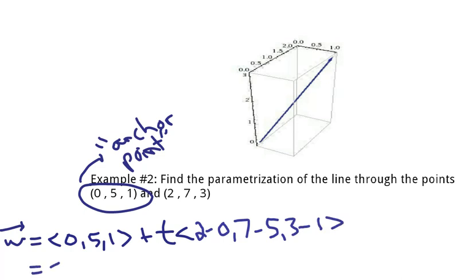So in all, I get (0, 5, 1). Again, notice I'm using that vector notation, plus t. And then in the vector, (2, 2, 2). So they all just happen to be 2s there.